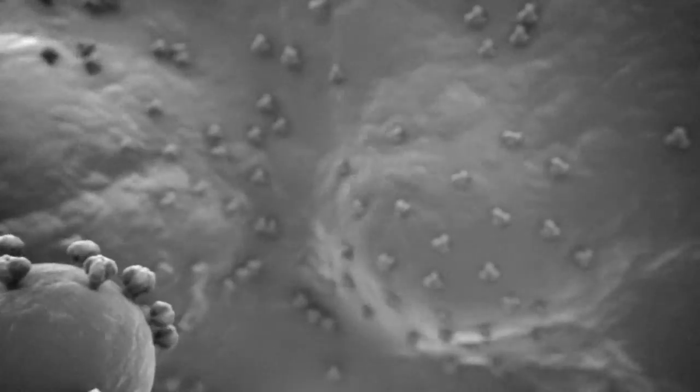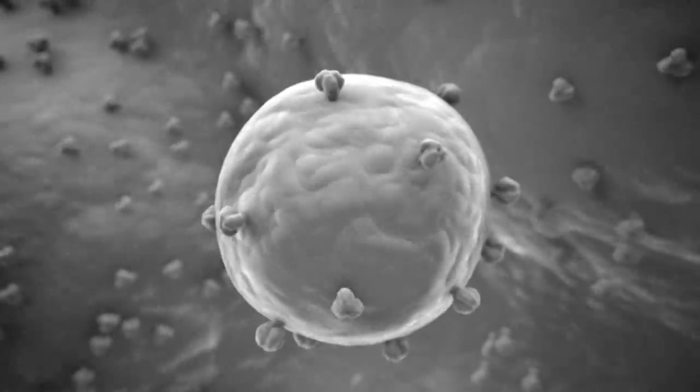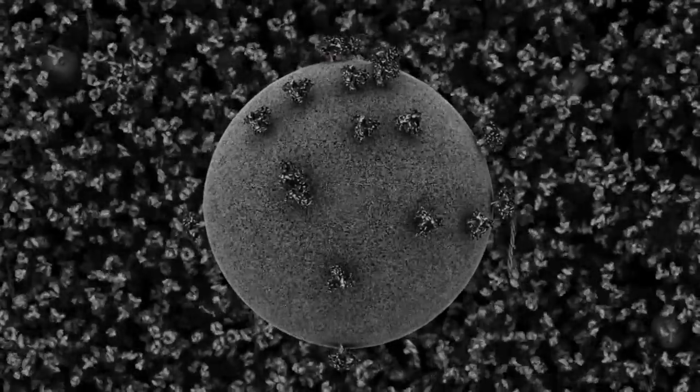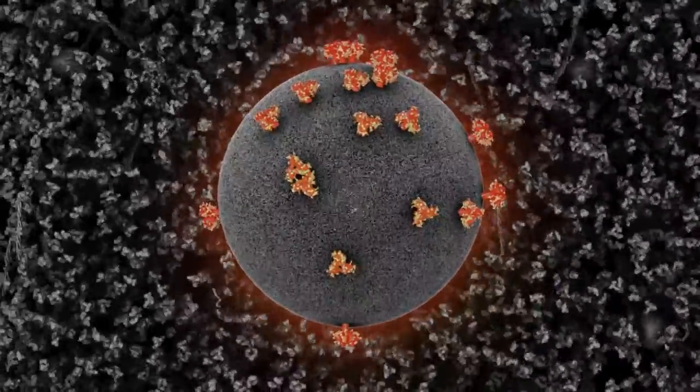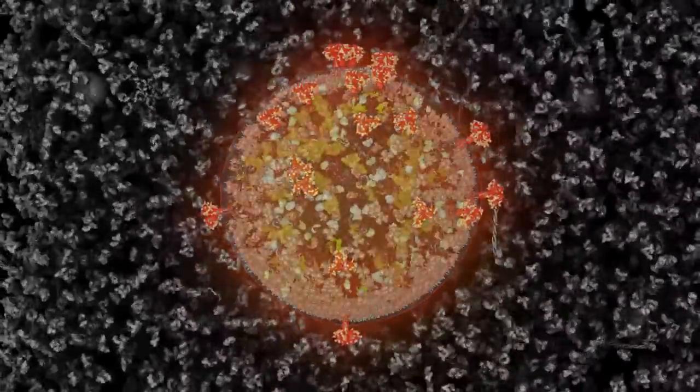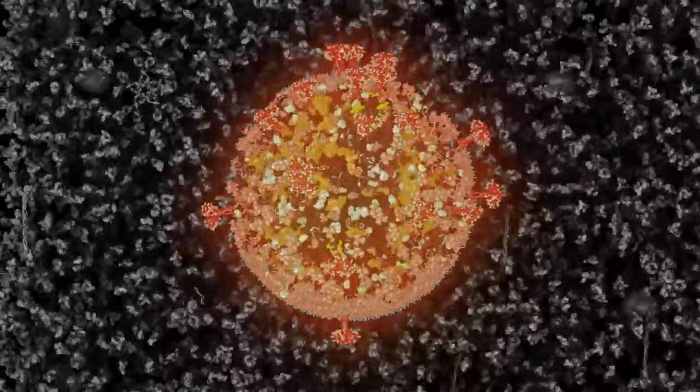HIV even wraps itself in a piece of the host cell as it bursts from within. On the surface of this virion, spike proteins are poised to penetrate another immune cell. Under the surface, a jumble of molecular machinery awaits release.